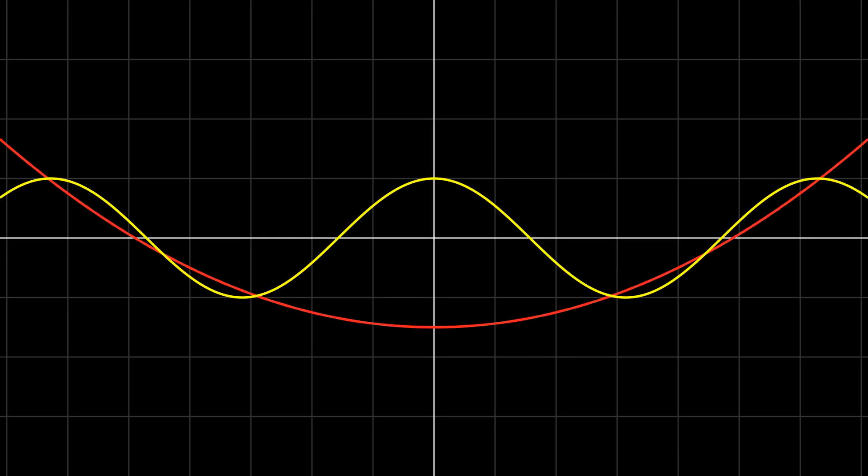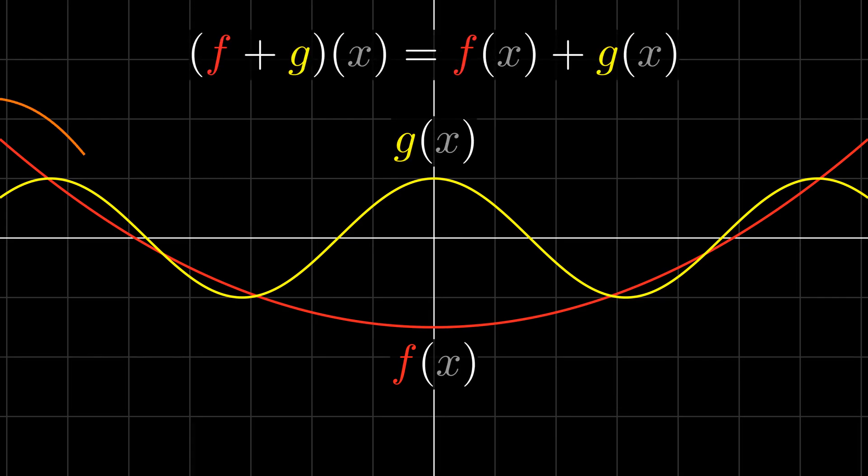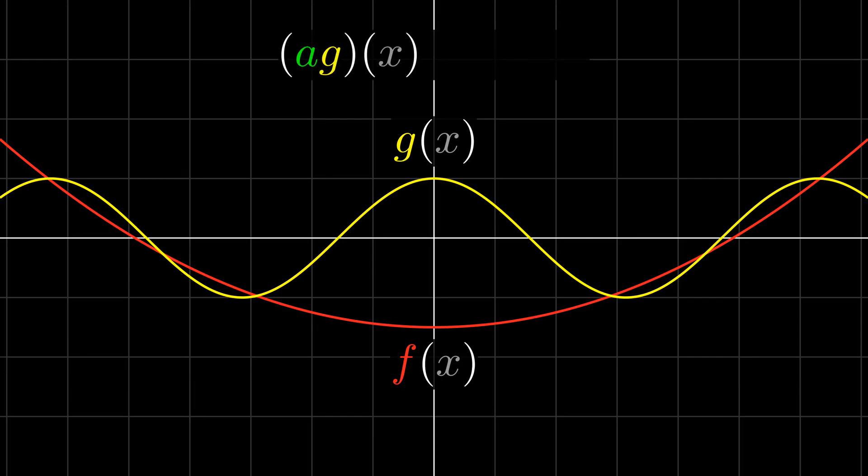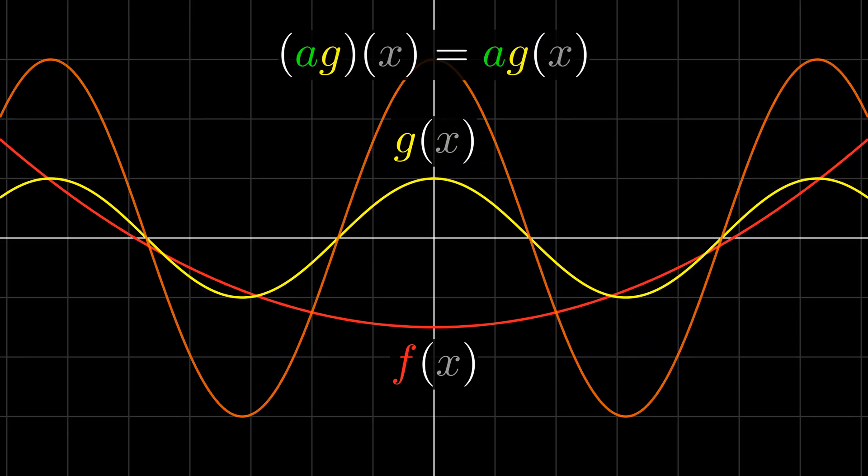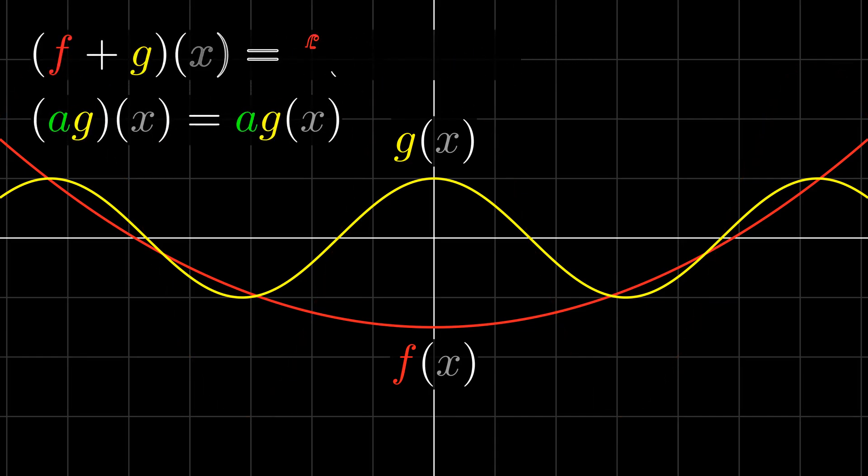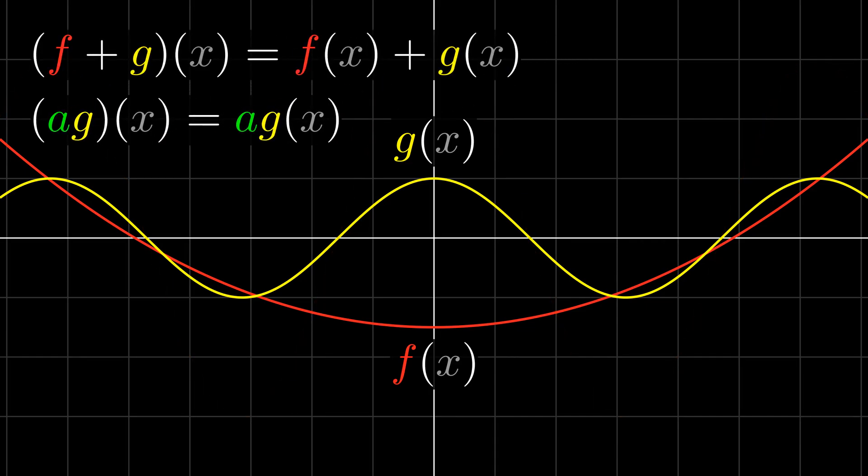Now, the last linear space that I want to look at in this video is one that is a bit more unusual. Consider functions. Given two functions f and g, we can add them by adding their outputs. We can also scale a function by a scalar by multiplying the output by that scalar. It's simple to verify that these definitions of addition and scalar multiplication satisfy the necessary conditions, so functions are vectors.